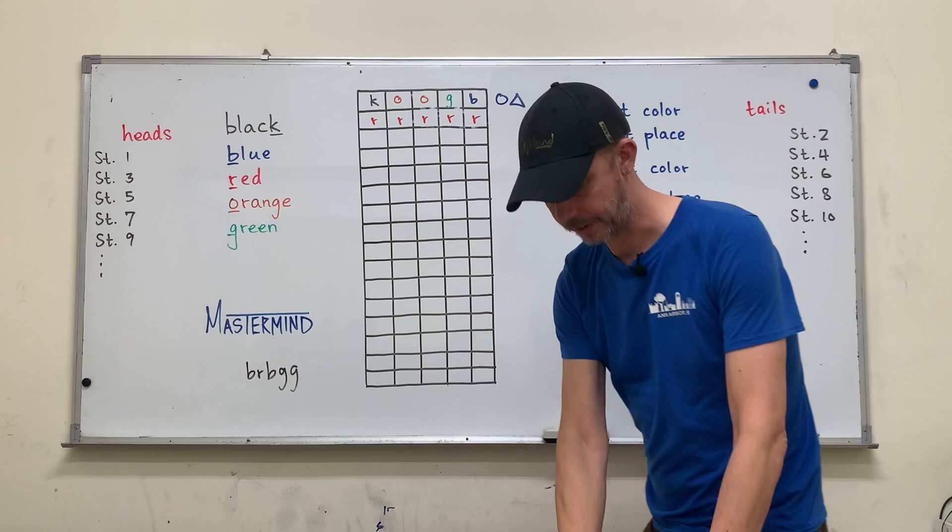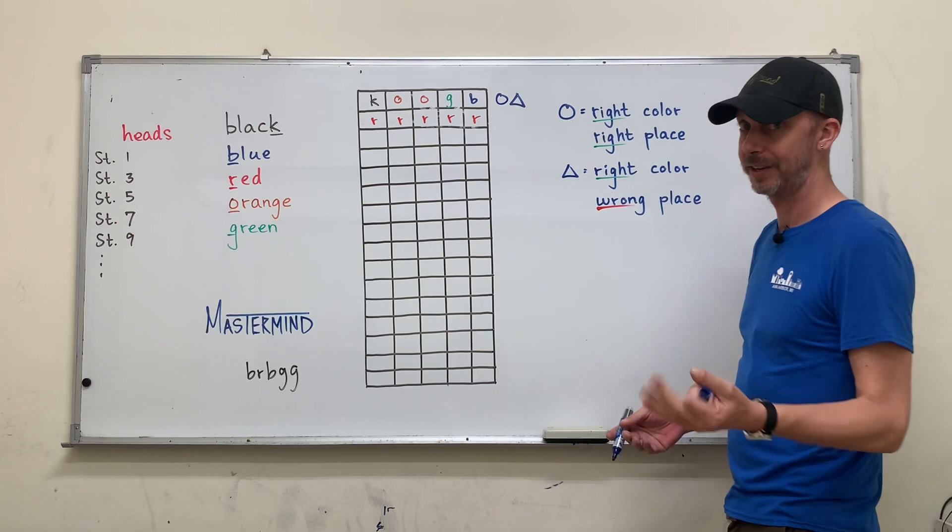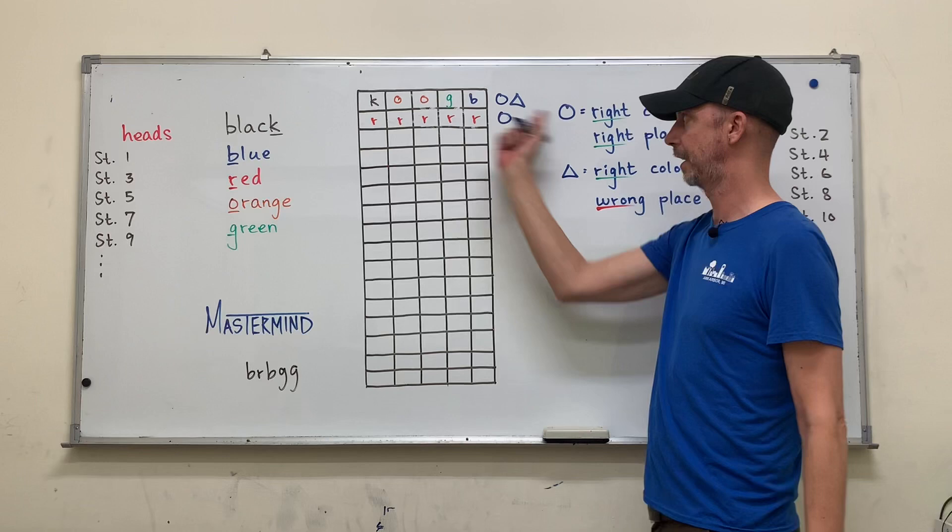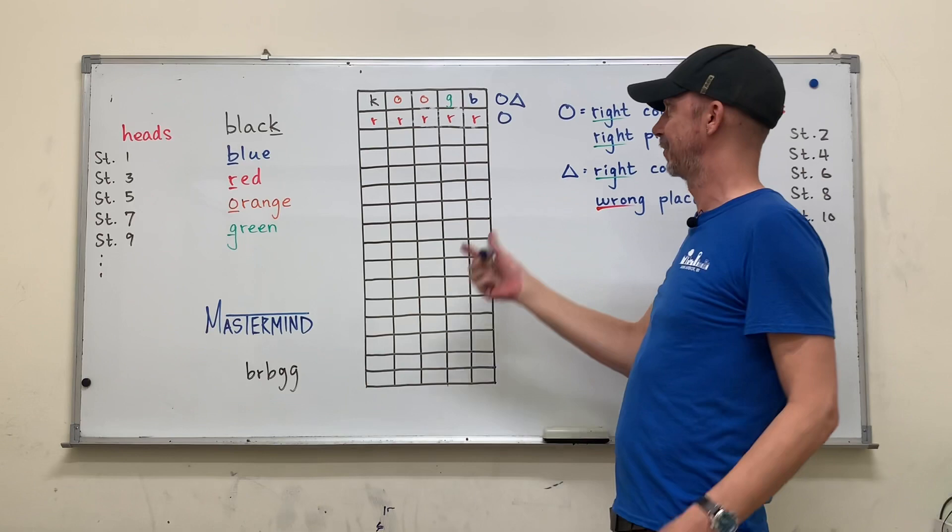So what would we, the teacher, write for this guess? Any guesses? We give them one circle because there is only one red in our real answer. And it's here. So obviously they guessed it in every position. You can show them that they have. So you could even say, look, there's only one red. It's somewhere. You got it right. Okay.